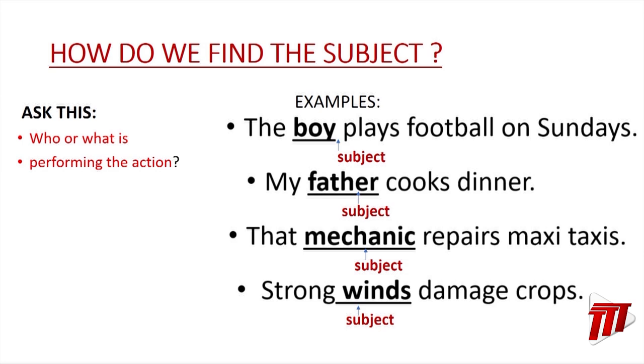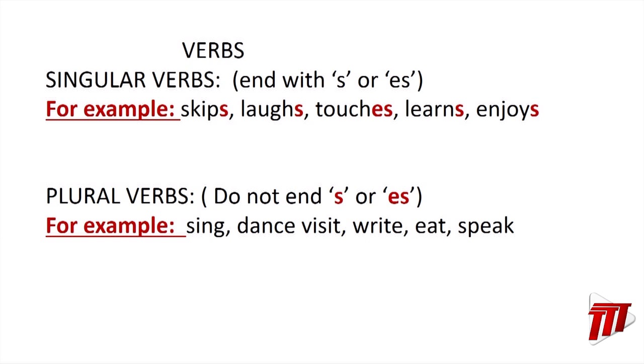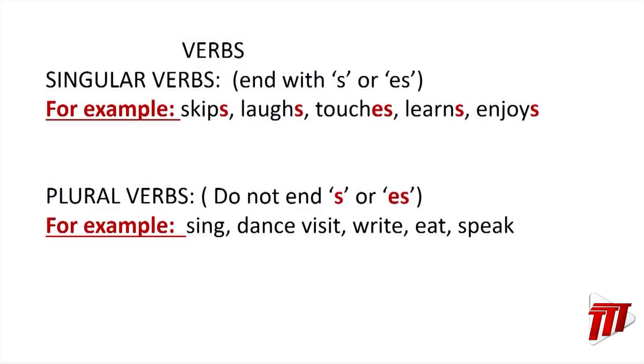That is how we find the subject and the verb of a sentence. Now we turn to singular and plural verbs. You would notice that verbs are the opposite of nouns. Nouns form their plural by adding s or es. Singular verbs end with s or es — for example: skips, laughs, touches, learns, enjoys. Plural verbs do not end with s or es — for example: sing, dance, visit, write, eat, speak.